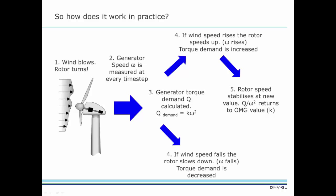The ratio of generator torque to generator speed squared returns to the optimal mode gain value. Similarly, if the wind speed falls, the rotor begins to slow down. This time, the controller response is to reduce torque demand, again stabilizing the rotor speed at a new value that restores the ratio of Q over omega squared to the optimal mode gain value.